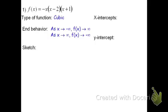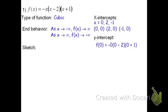We can use the zero product property to find the x-intercepts. If we substitute f equals zero, we get zero equals negative x times the quantity x minus 2 times the quantity x plus 1, and then we can split it to solve. This means x equals zero, x equals two, and x equals negative 1 are the roots of this function. As the x-intercepts, those would be (0, 0), (2, 0), and (-1, 0). The y-intercept can be found by doing f of zero. Because one of the x-intercepts is (0, 0), the y-intercept is also (0, 0), since that is the only point that has zero for both x and y.